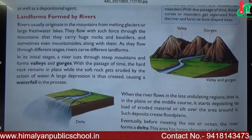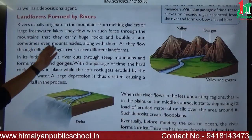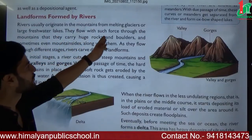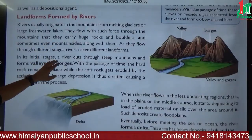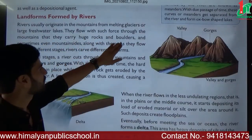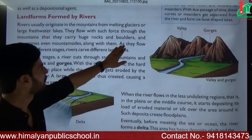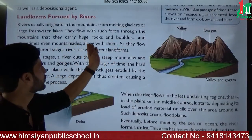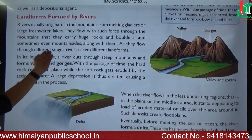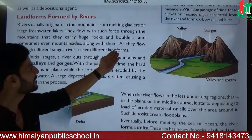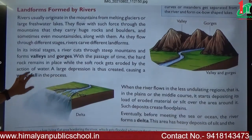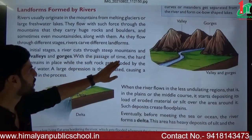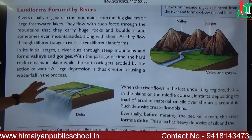Rivers usually originate in the mountains from melting glaciers and large freshwater lakes. They flow with such force through the mountains that they carry huge rocks and boulders, and sometimes even the mountain side along with them. As rivers flow through different stages, they carve different landforms. In the initial stage, a river flows through steep mountains and forms valleys and gorges.